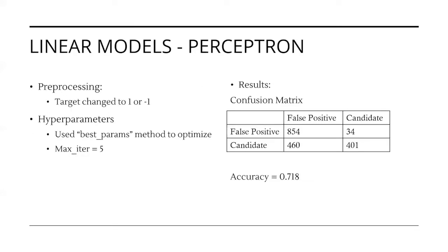The first linear model we fitted was perceptron. Before fitting, we needed to change the target variable to a numeric value. For perceptron, it works best if they are non-zero values, so we used negative one and one. The only hyperparameter we optimized was the maximum number of iterations. Using the best params method, we found five to be the optimum value for the maximum number of iterations. We then fitted the model with the optimal parameter and validated on the test data set. This produced a resulting confusion matrix and an accuracy of 0.718.